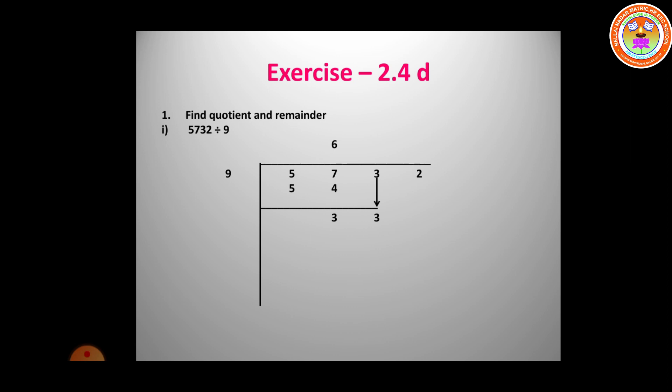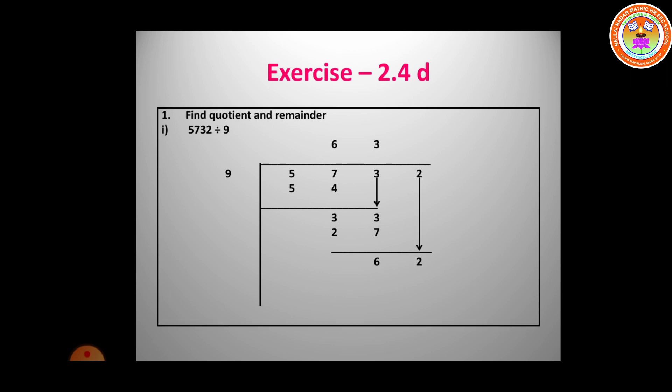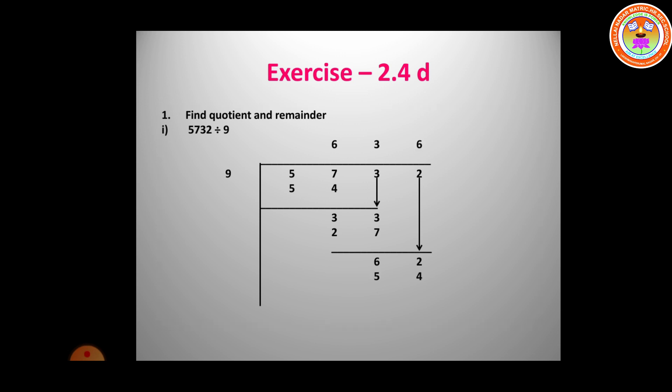In the nine times table, check where 33 comes — three 9's are 27, remainder is 6. Bring the next number down — it becomes 62. In the nine times table, six 9's are 54, remainder is 8. Therefore, the quotient is 636 and the remainder is 8.